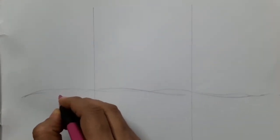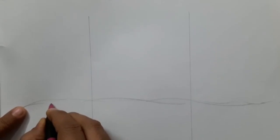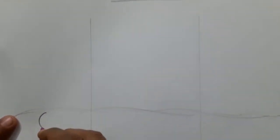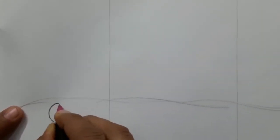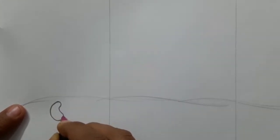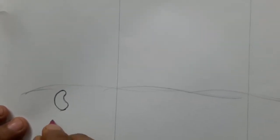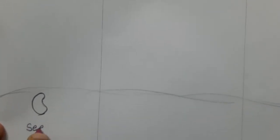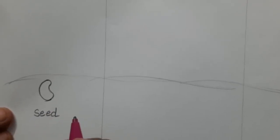Here, now I am going to draw a seed. This is the first stage. So one seed and then like this, one small curve we will take so it will become a seed. Here we are going to write 'seed'.